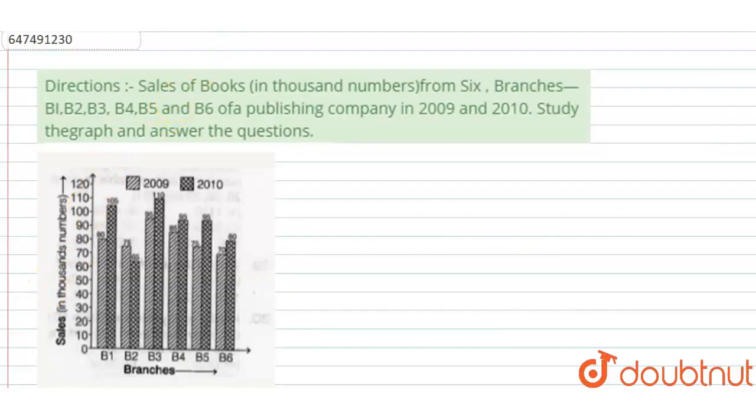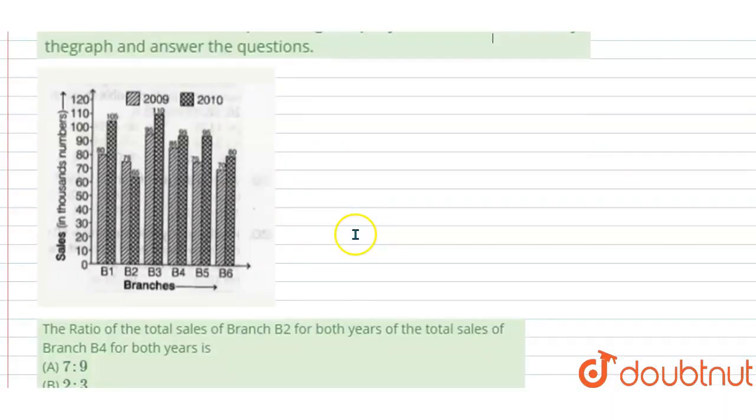Hello everyone. The question is: Sales of books from six branches B1, B2, B3, B4, B5 of a publishing company in 2009 and 2010. Study the graph and answer the following questions.